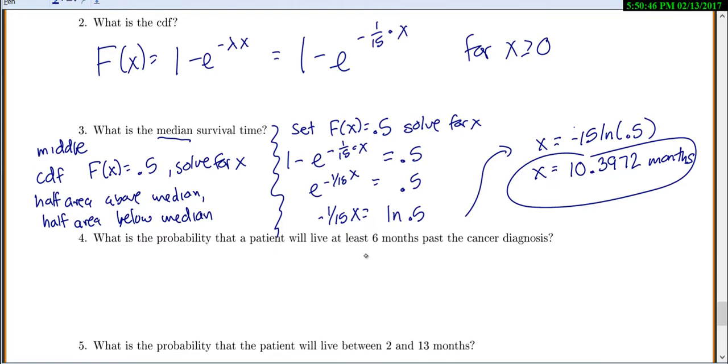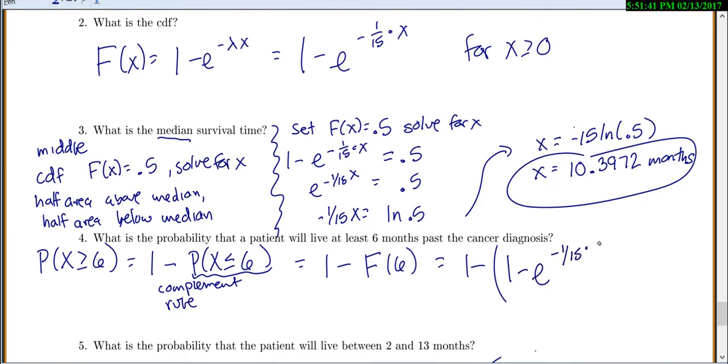Number four, what is the probability that a patient will live at least 6 months past the diagnosis? So we're looking for the probability that x is greater than or equal to 6. Now, if you want to use the CDF, CDFs are always the probability of x is less than or equal to something, so we have to use the complement rule. So 1 minus the probability that x is less than or equal to 6. That's the complement rule there. But if I use the complement rule, then this probability that x is less than or equal to 6, that's just our CDF. So it's just going to be 1 minus the CDF of 6 months. And now you just plug it into your CDF. So 1 minus e to the negative 1 over 15 times 6. So we get 0.6703.